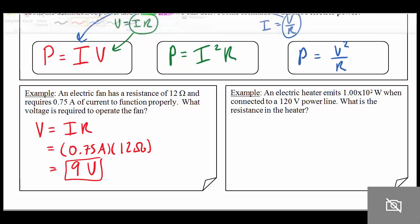And our next question here, an electric heater emits 1.00 times 10 to the 2 watts, or 100 watts, when connected to a 120 volt power line. What is the resistance of the heater? Well, looking at what I know here, I know the power, and I know the voltage, and what I want is the resistance.